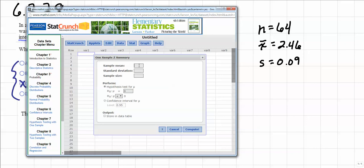You'll see that we will enter the sample mean right here, which is going to be 64. Simply type in 64. Then we want to... I'm sorry, not 64, that would be the sample size. The sample mean is 2.46. Standard deviation is 0.09. Sample size, that's where you're going to type in the 64.